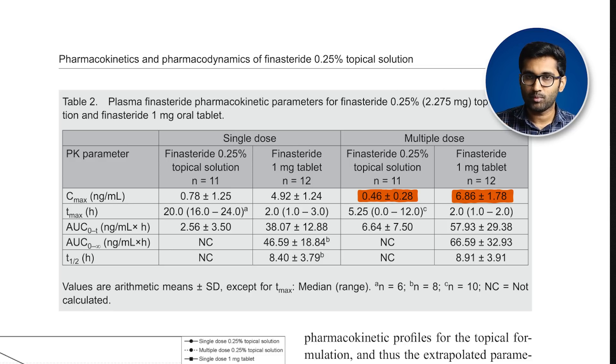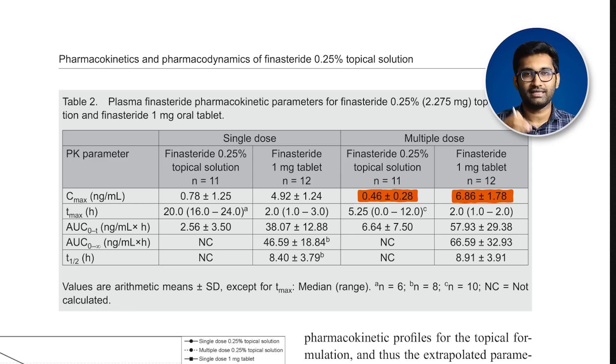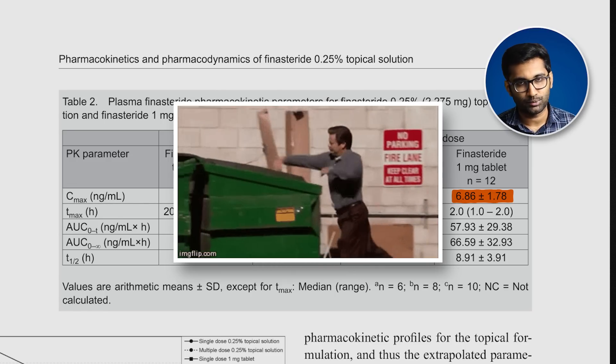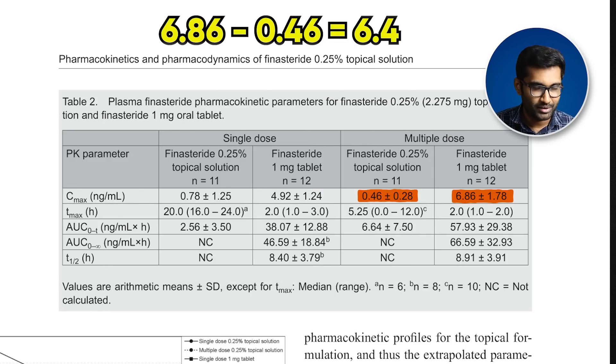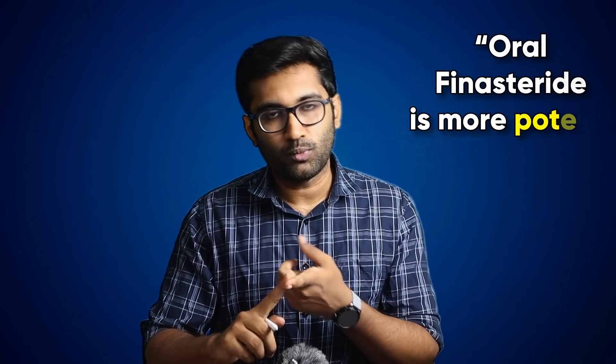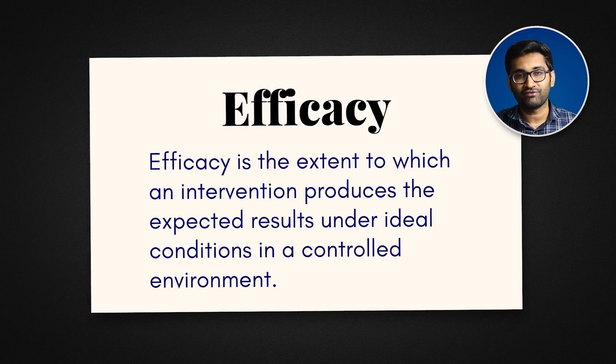The data shows that the same amount of DHT is blocked with topical application. The oral finasteride results in higher drug concentrations systemically, while the topical finasteride concentration in the blood is significantly lower. The drug exposure difference is approximately 6.4 ng per mL. Oral finasteride is more potent in systemic exposure — the peak concentration (Cmax) is higher. However, for therapeutic effect on hair, the key is DHT suppression over time.